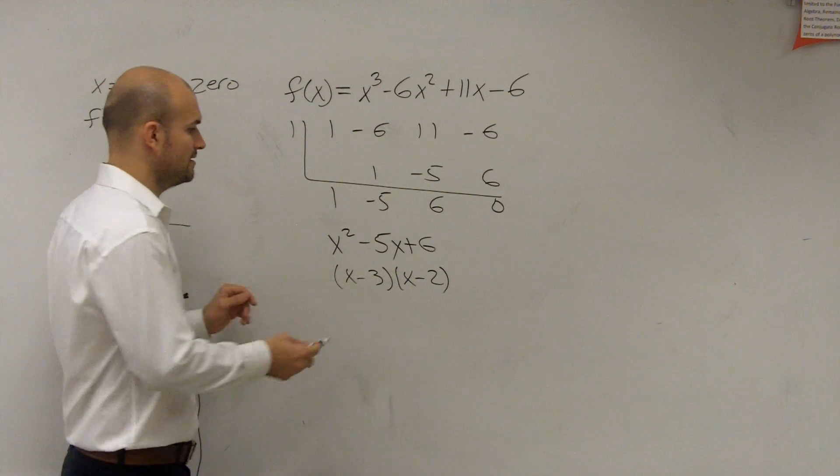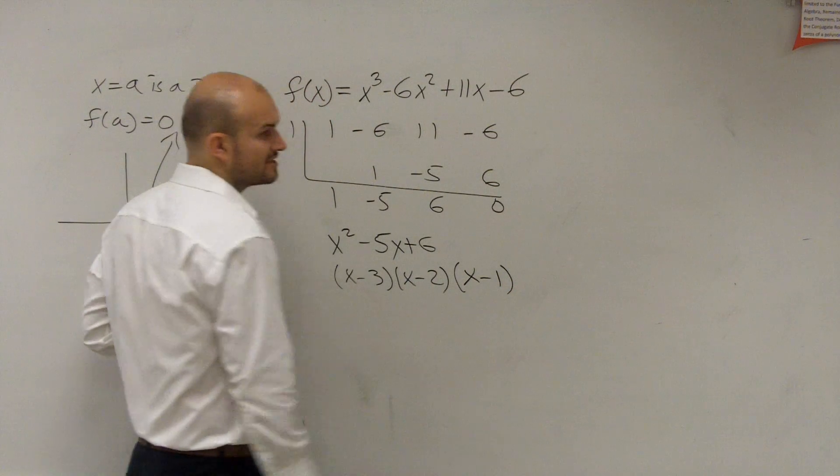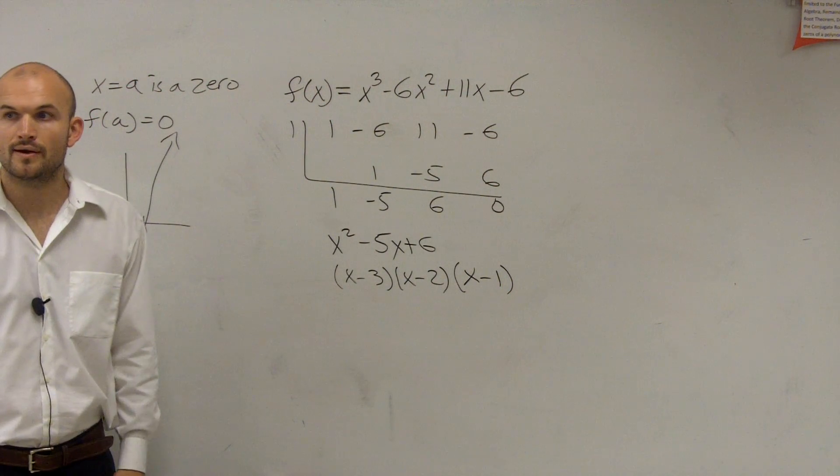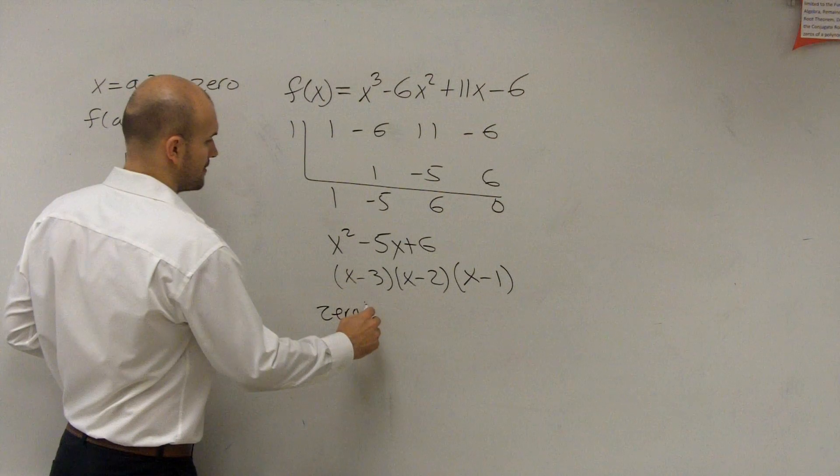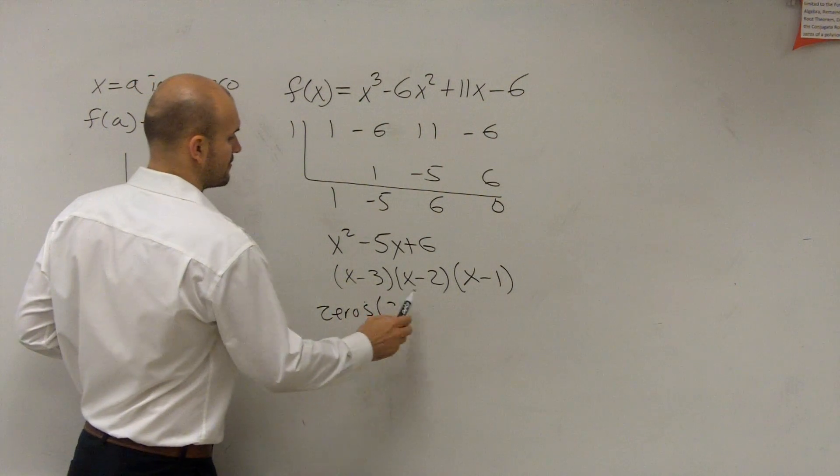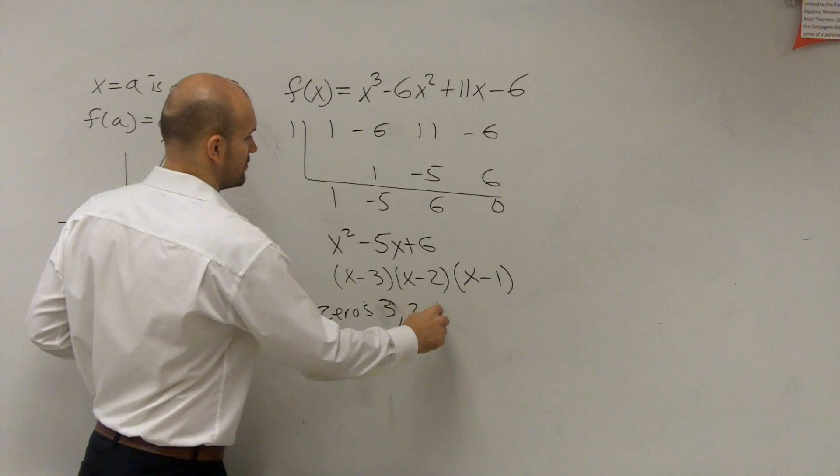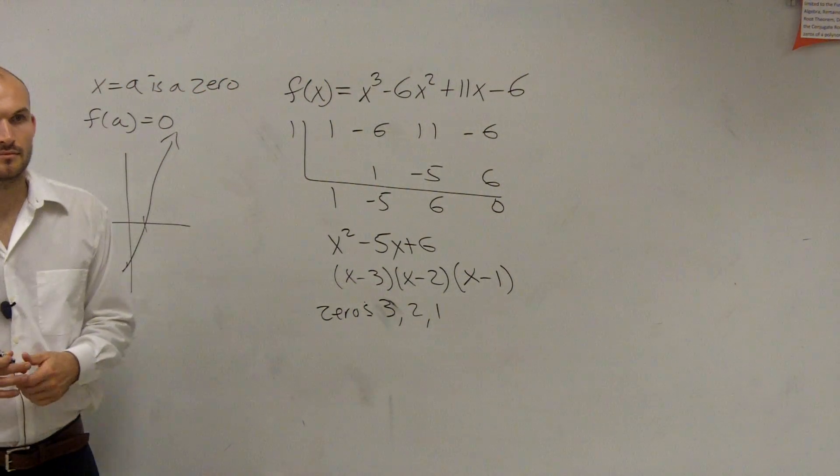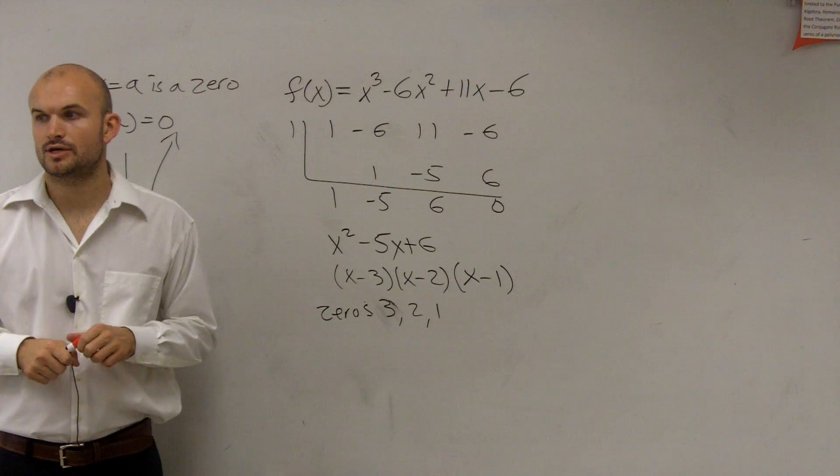So then you can write now, so if this is my zero, that means that x minus 1 is my factor. So therefore, my zeros are going to be 3, 2, and 1. That's all you got to do. That's all you guys had to do.